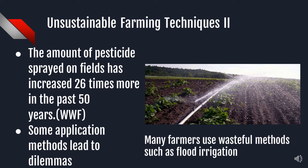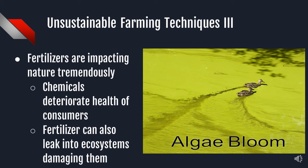According to the World Wildlife Foundation, the amount of pesticides sprayed on fields has increased 26 times more in the past 50 years. In many situations, fertilizers can cause pollution to land adjacent to rivers and wetlands, which means many ecosystems will be affected by the fertilizer. Fertilizers are deteriorating our resources to the point where they are unusable. Other chemicals such as pesticides are deteriorating the health of our consumers. Fertilizers can also leak into ecosystems, endangering the many animals that live there.